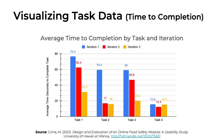Here's a more advanced visualization of time data. This figure shows the average time to completion for four different tasks. What's unique about this visualization is how the results are broken down by three different design iterations. In general, we want usability tasks to be completed quickly, so lower times are better. This visualization tells a story about how each revision made it easier and easier to complete the tasks. In the first iteration, task one took 76.4 seconds on average. This dropped to 62.4 seconds by the second iteration, then all the way down to 31.2 seconds for the third iteration — showcasing how Michelle revised her module to be more and more user-friendly.